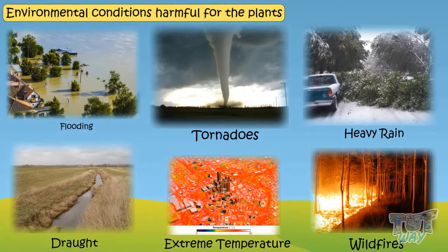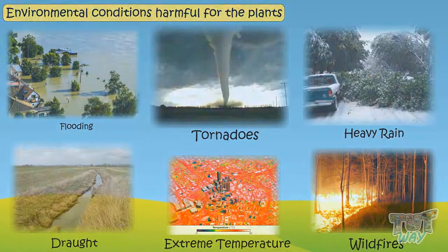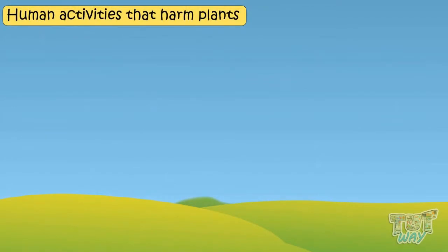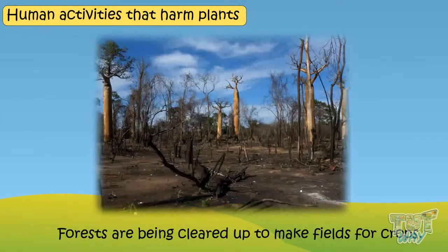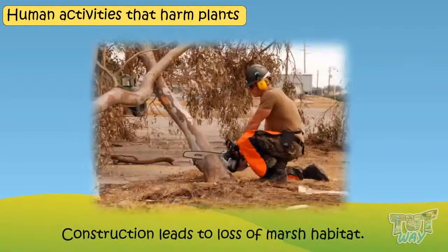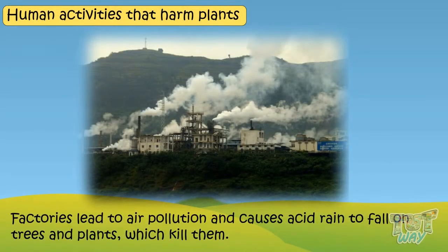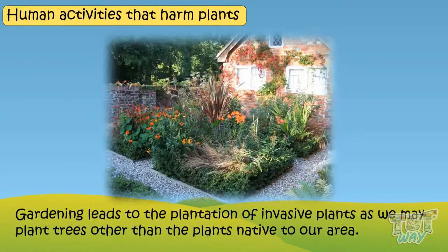Let's also look at some human activities that are not good for plant life on Earth. Forests are being cleared to make fields for crops. Construction leads to loss of marsh habitat. Factories lead to air pollution and cause acid rain to fall on trees and plants, which kills them. Even gardening can lead to plantation of invasive plants, as we may plant species not native to our area.